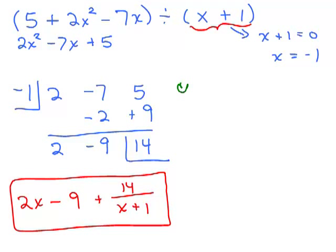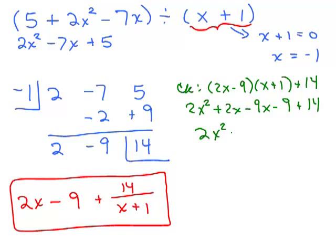Now let's do a quick check. You could always put the video on pause and try this on your own. What do we do? We multiply the quotient, which is 2x minus 9 times what we divided by, x plus 1, and add the remainder. And we're going to see if that's going to be 5 plus 2x squared minus 7x. So we get 2x squared plus 2x minus 9x minus 9 plus 14. It's 2x squared minus 7x plus 5. And is that the same thing as 5 plus 2x squared minus 7x? Yes. And in fact, I had written it like that here. So it checks. And there's our answer.